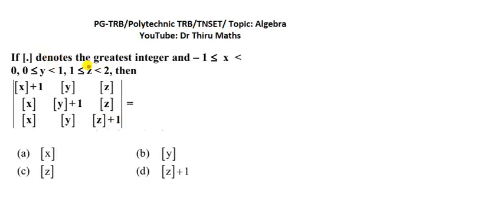First we read the question and understand the question. The notation is denoting greatest integer function and they are given the intervals of x, y, z. We have to find out the determinant value using greatest integer function.